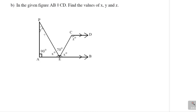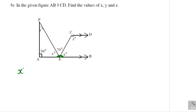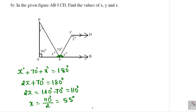In the given figure, AB is parallel to CD. Find the values of X, Y, and Z. Observing the diagram, X degrees, 70 degrees, and X degrees form a straight angle, meaning 180 degrees. So X plus 70 plus X equals 180 degrees. That gives 2X plus 70 equals 180, so 2X equals 110 degrees, and X equals 55 degrees.